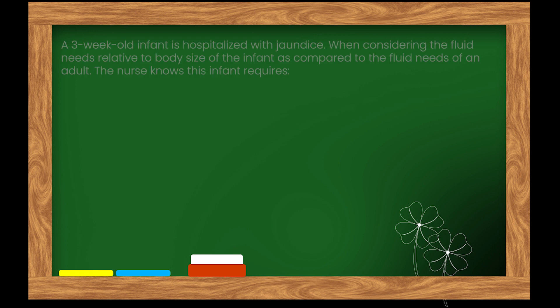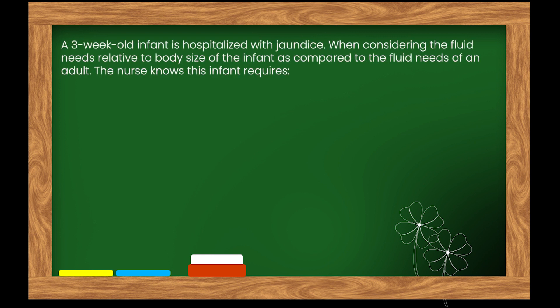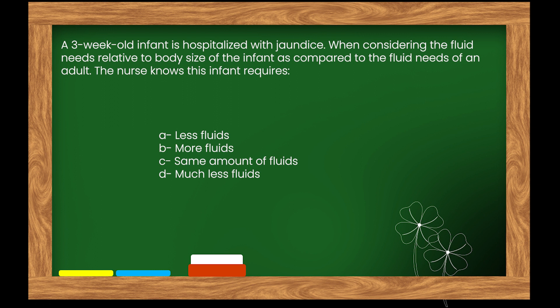Here is our next question. A 3-week-old infant is hospitalized with jaundice. When considering the fluid needs relative to body size of the infant compared to the fluid needs of an adult, the nurse knows this infant requires: Options: A. Less fluids. B. More fluids. C. Same amount of fluids. D. Much less fluids.